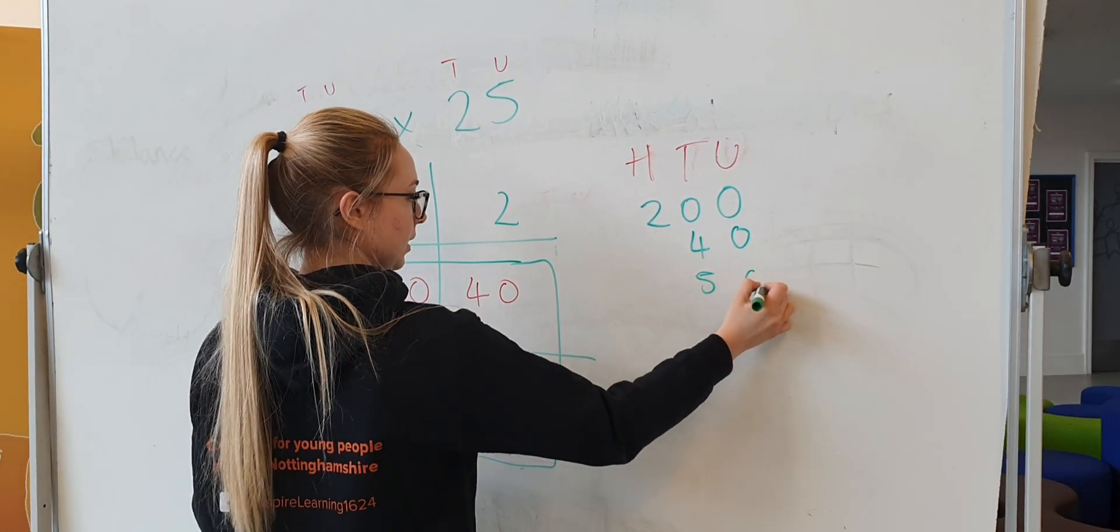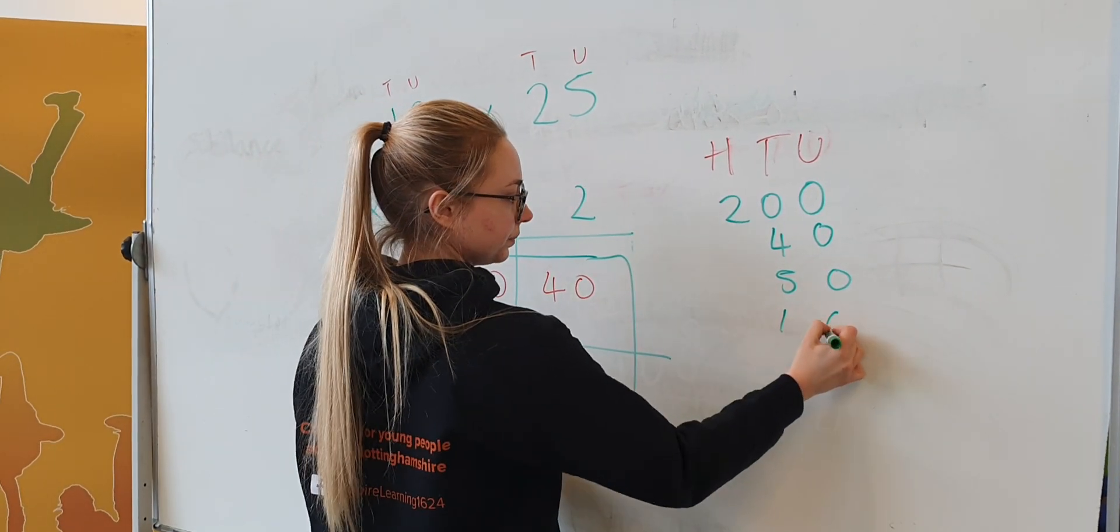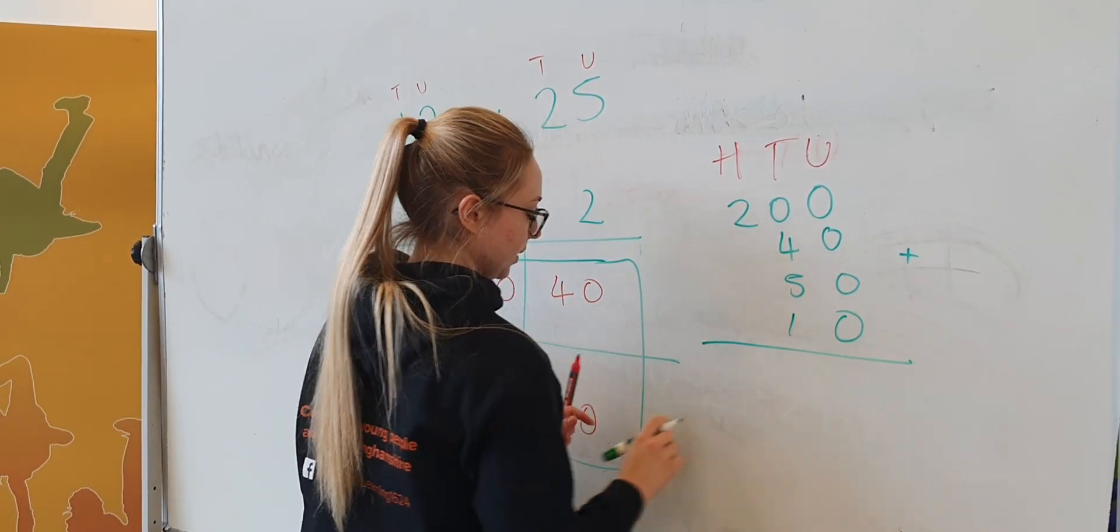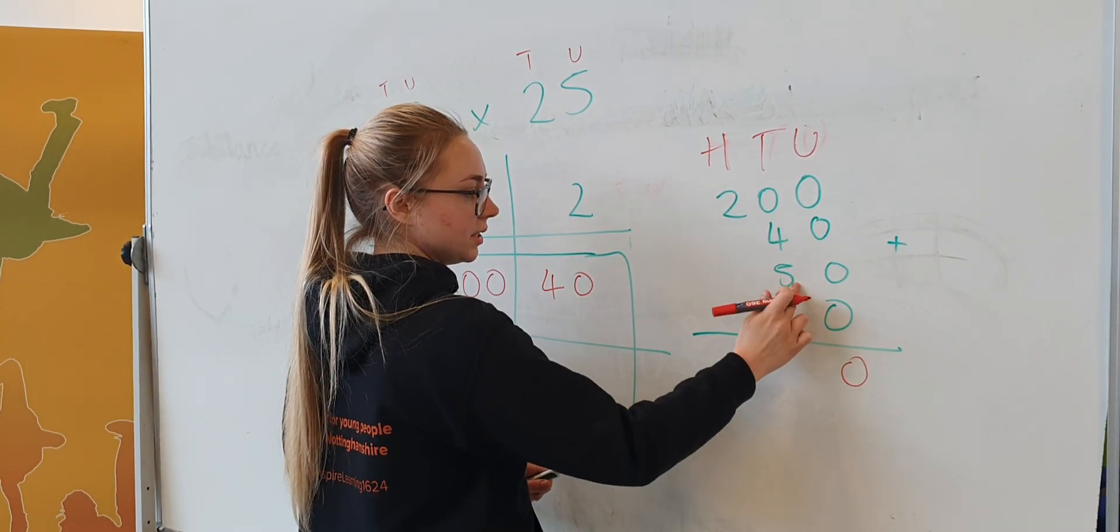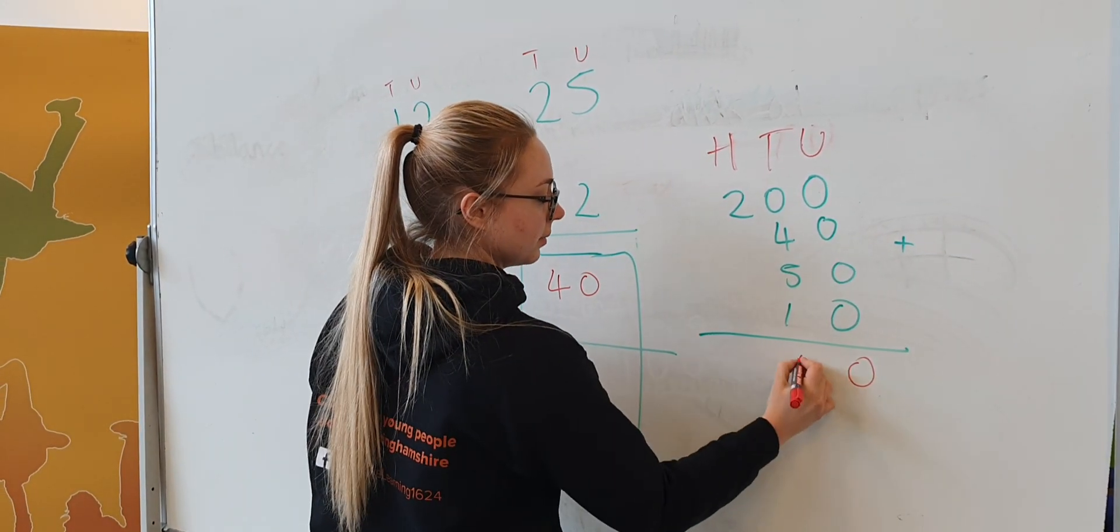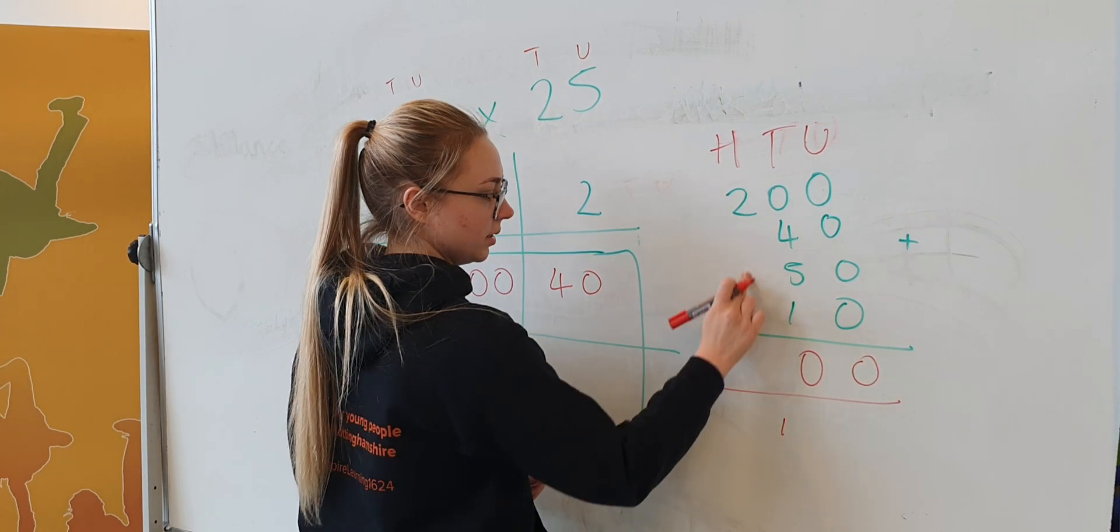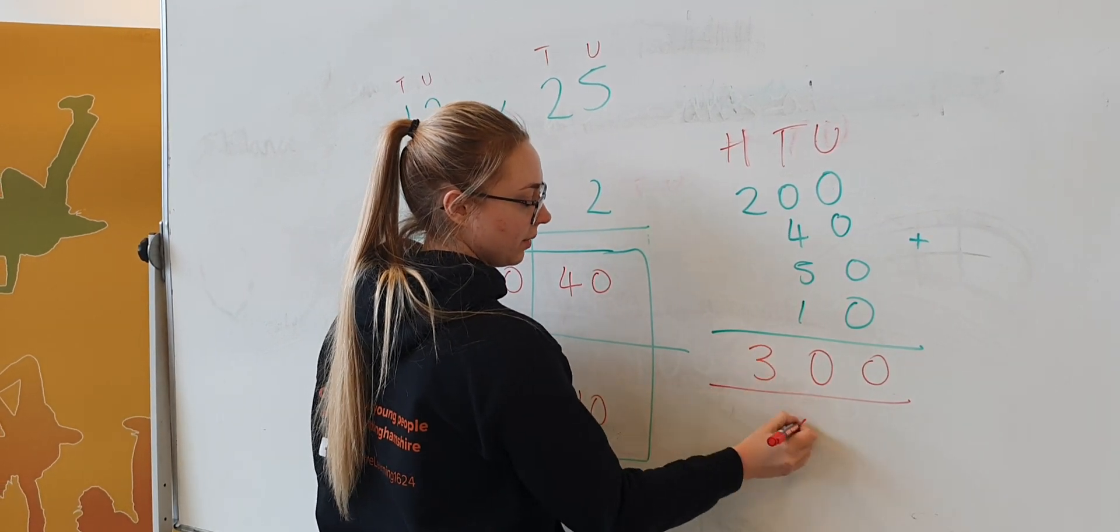I've got 50 and I've got 10. Adding them up, so down here zero. Add these two together, carrying that over to nothing. Remember that one zero, add them up, so down here it's 300.